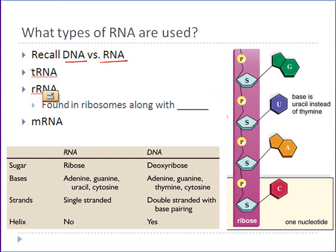There is one type of RNA called tRNA, where the 't' stands for transfer. Transfer RNA is a type of RNA that serves as a transport molecule that brings amino acids to the location where a protein is being manufactured. I'll point out tRNA when we get to that part.